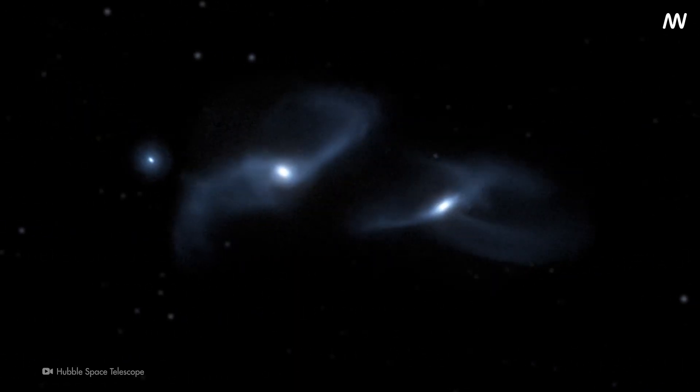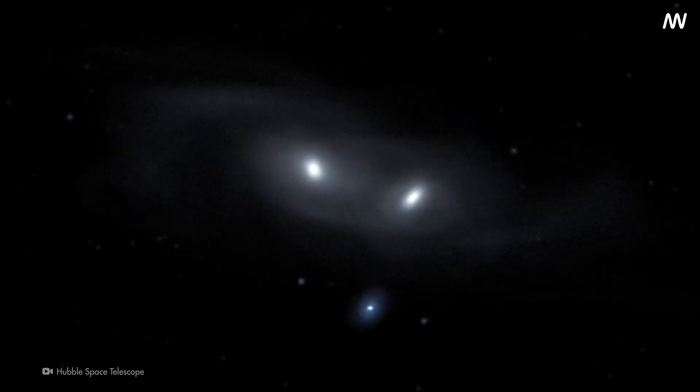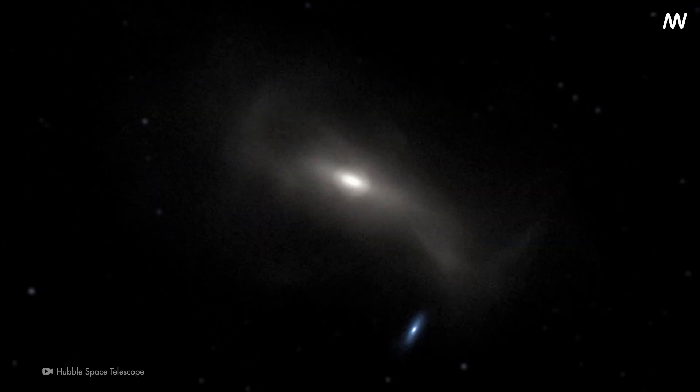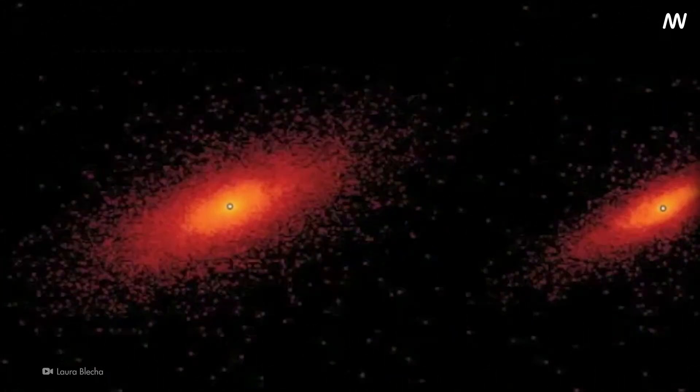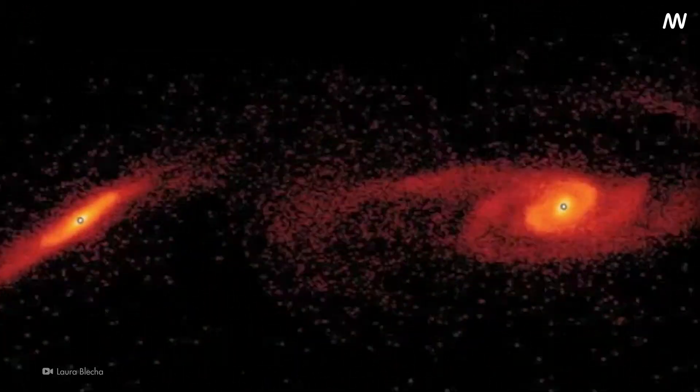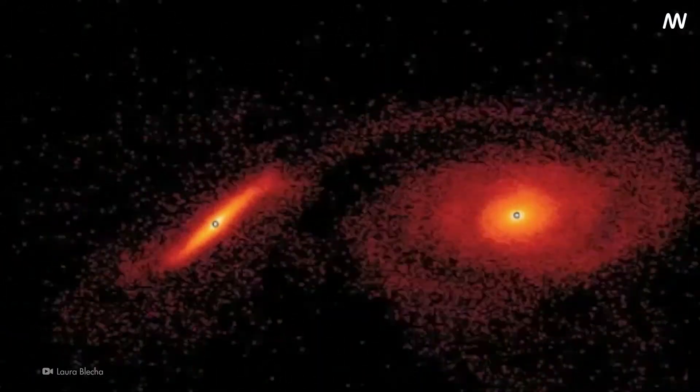When galaxies merge, each with a supermassive black hole at its center, their gravitational interactions can become chaotic. It's thought that a third galaxy with its own supermassive black hole entered the mix. The result? One black hole gained momentum from the others and was propelled out of the galaxy.